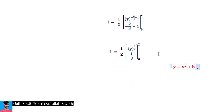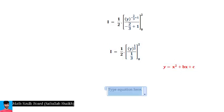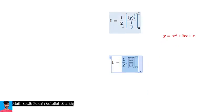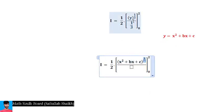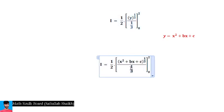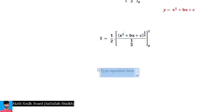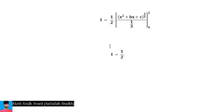Before applying the limits, we back-substitute y = x² + bx + c. So the expression becomes (1/2)·[(x² + bx + c)^(1/3) / (1/3)], with upper limit 2 and lower limit 0.